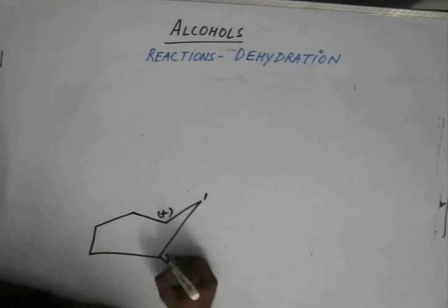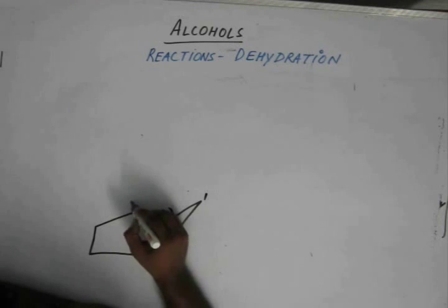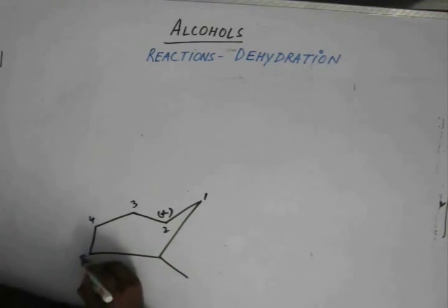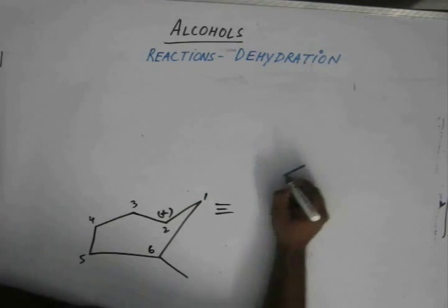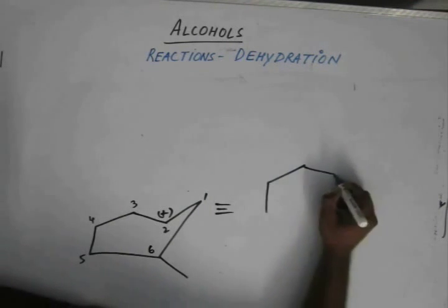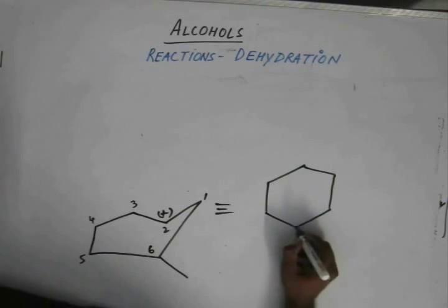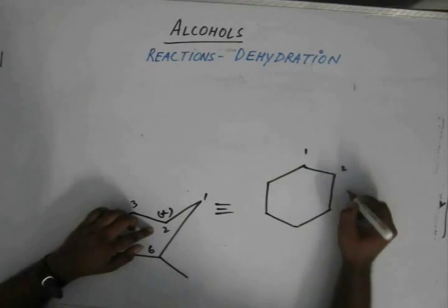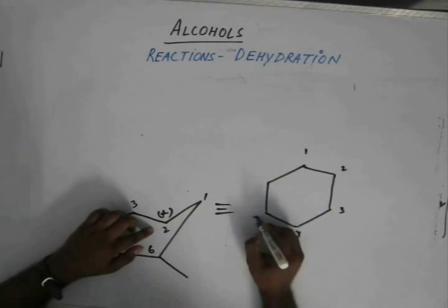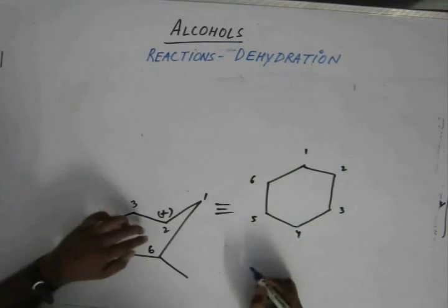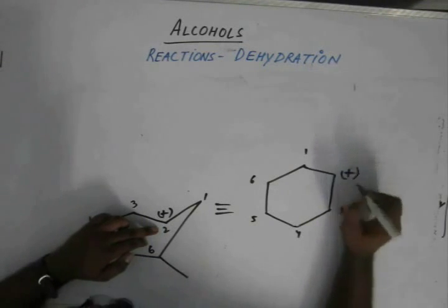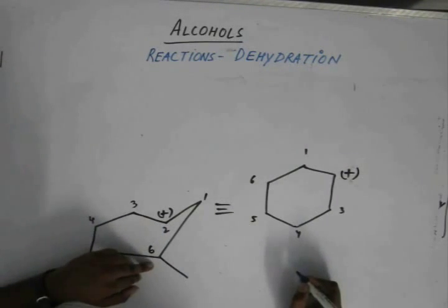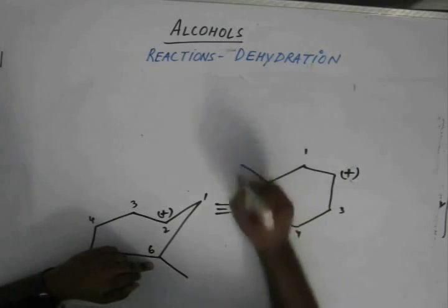I would suggest you to number these: one, two, three, four, five, six. We will draw a six-membered carbon ring. One, two, three, four, five, six. At the second position, we have a carbocation. At the sixth position, we have a methyl group.